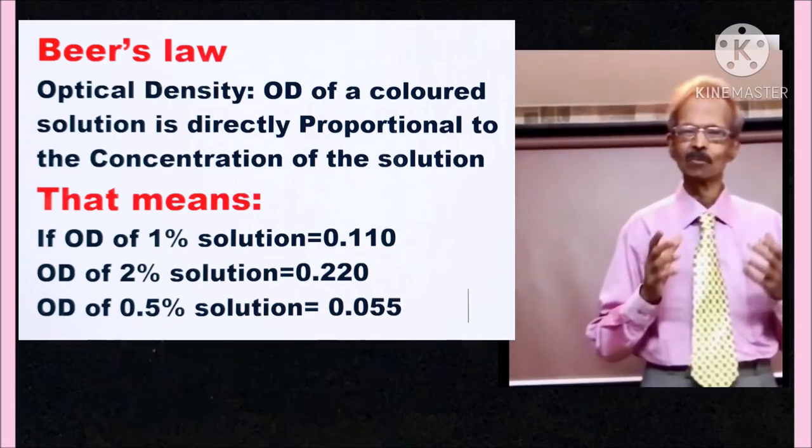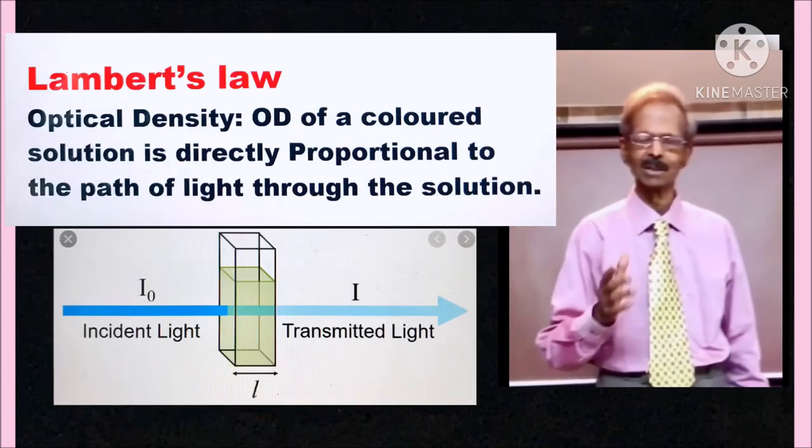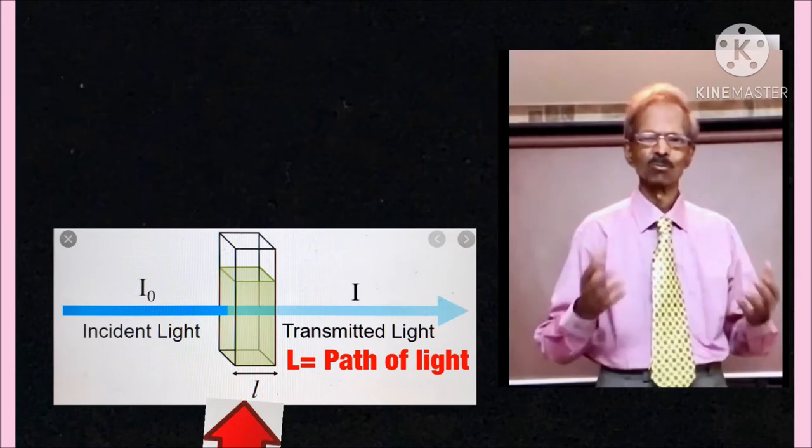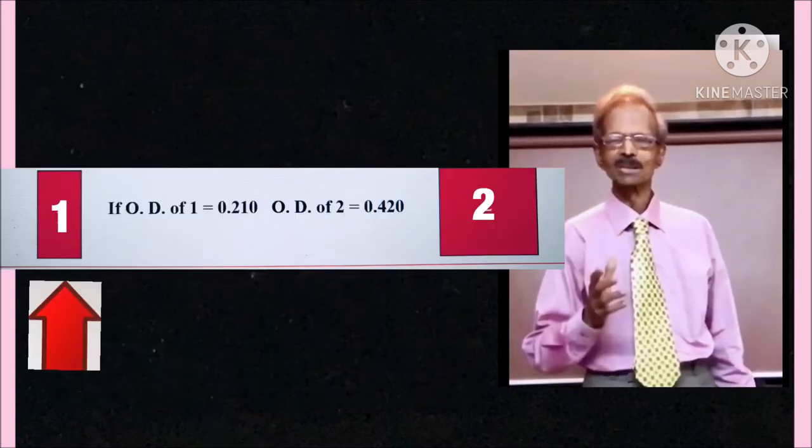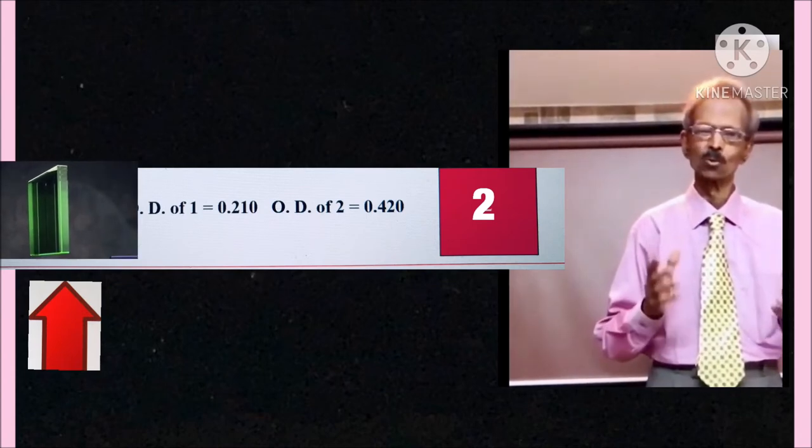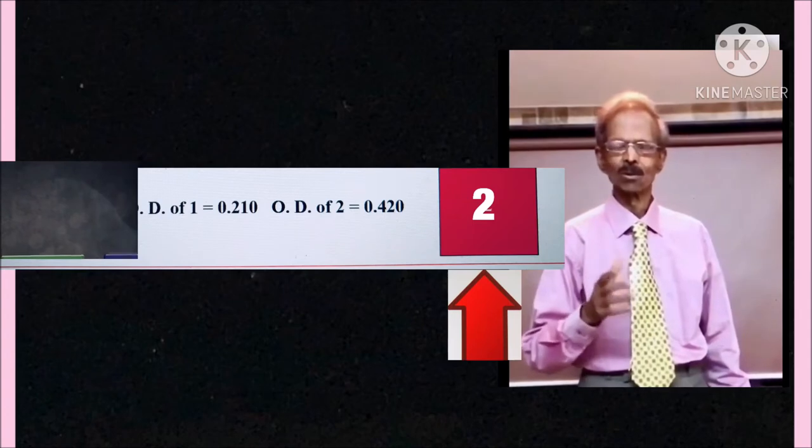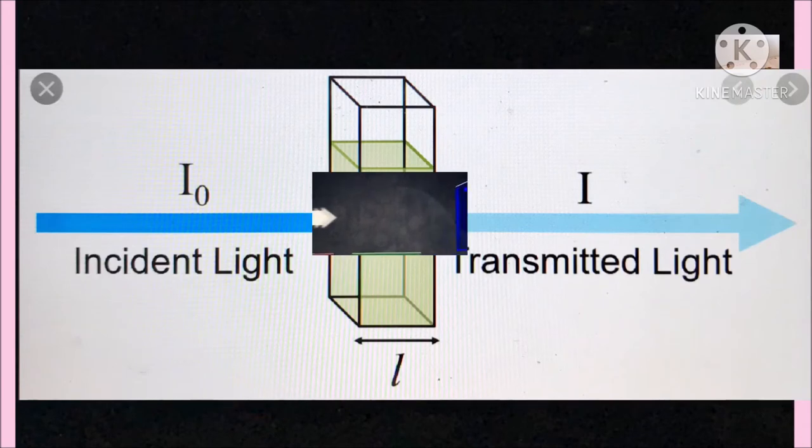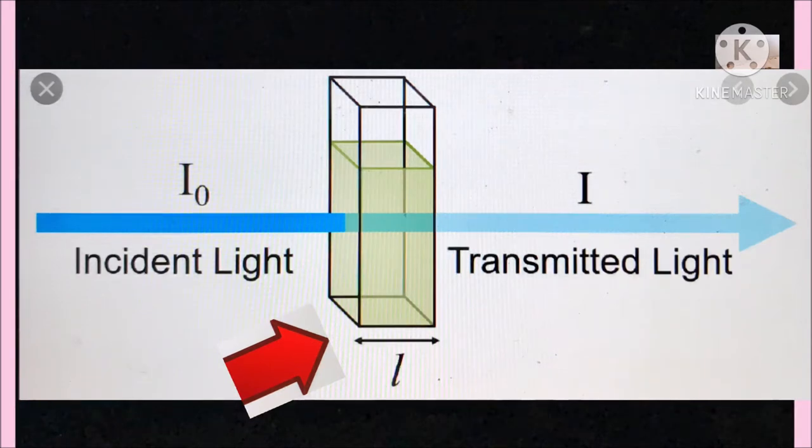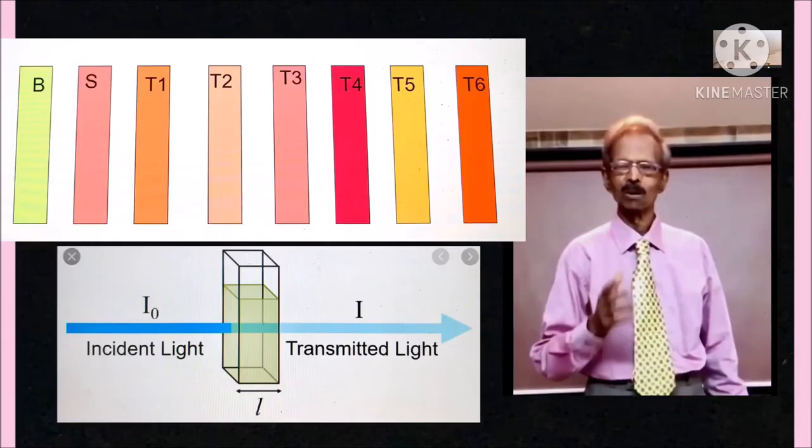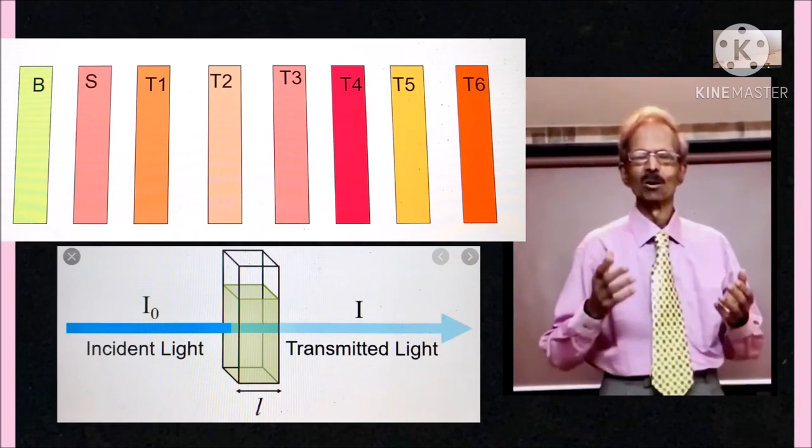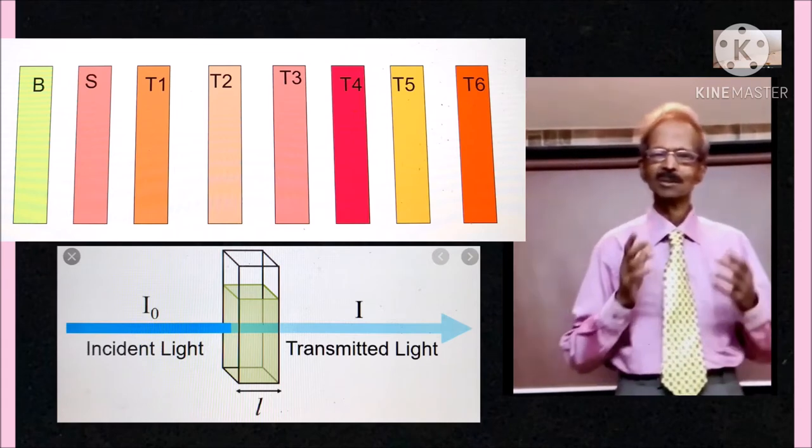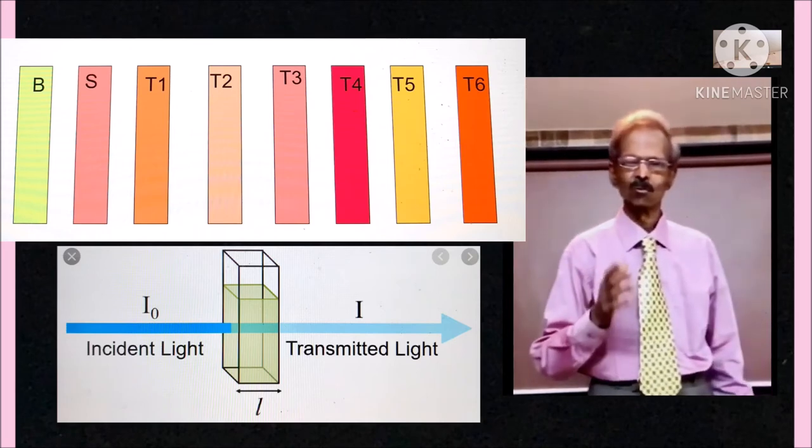According to Lambert's law, OD of color solution is directly proportional to the path of light. That means if OD of a solution with 1cm light path is 0.1, then that of 2cm light path will be 0.2. Light path in photometry means diameter of a cuvette and it is usually 1.0cm. All cuvettes are made of specially optically matched glass with 1.0cm diameter. That also means light path of 1cm is constant for all tests.